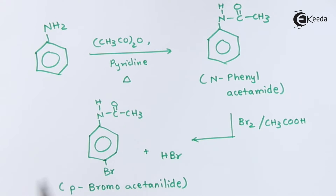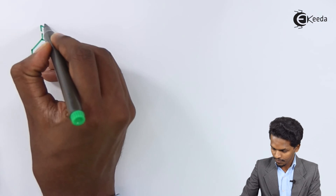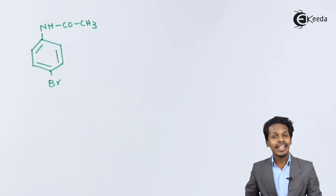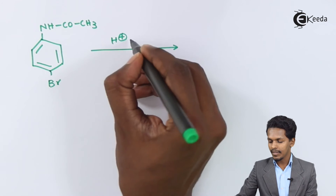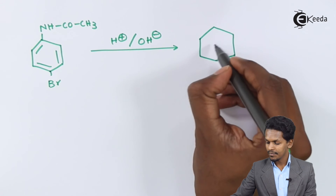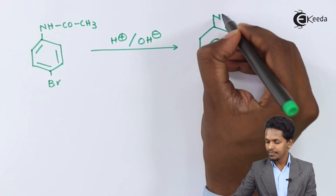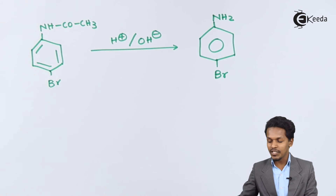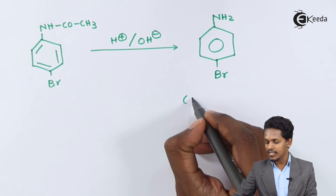Now we convert the acetamido group back to the NH₂ group. We treat p-bromoacetanilide with HCl or a base, which hydrolyzes the acetamido group back to –NH₂. The product obtained is 4-bromoaniline, which is our desired mono-bromo derivative.